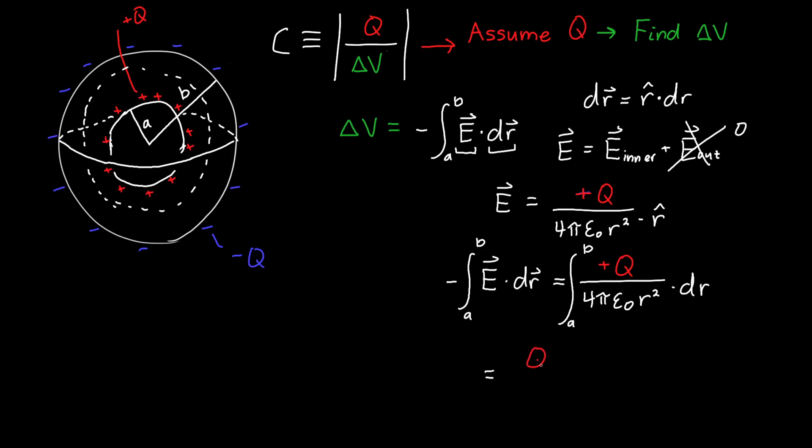We've got Q on top with a negative sign because we've picked up our negative sign, and on the bottom we've got 4π epsilon naught. Now we're integrating from R equals A to R equals B, 1 over R squared dR.